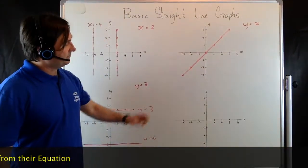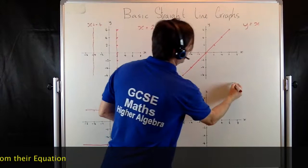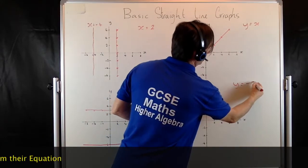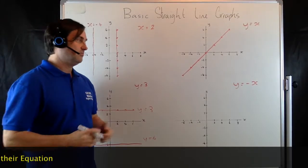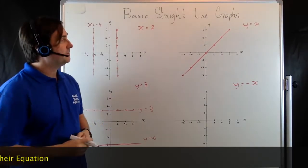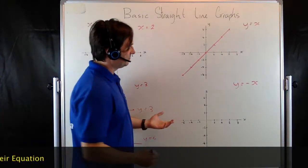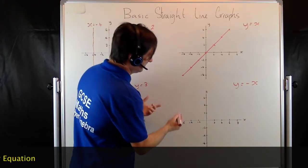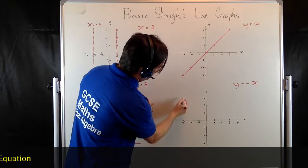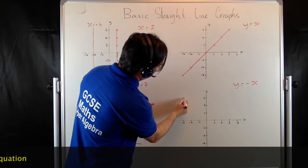So the final one then, we're going to look at y equals negative x. Now, it should be pretty clear to see what's going to happen here. Because let's say, for example, y was 6, then x must be negative 6. So we've got a point here.